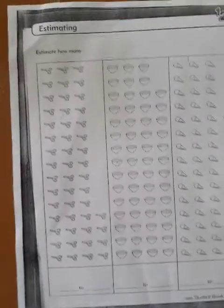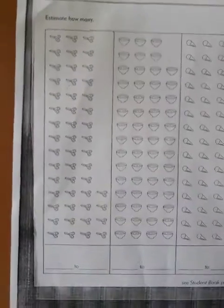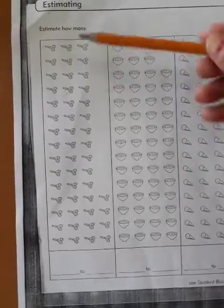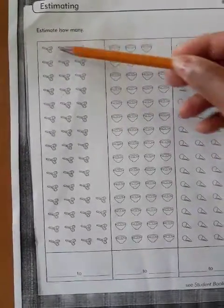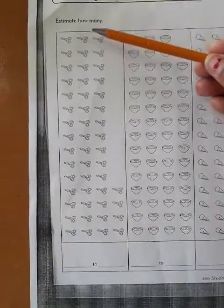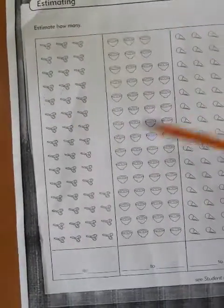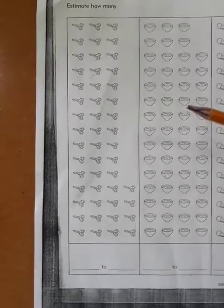Now first of all the first column has got scissors. Let's count together. So here it's starting with 3. You can count in 1's, but I'm going to count quicker with my own understanding.